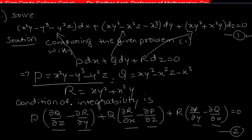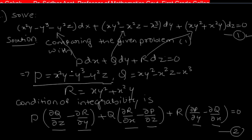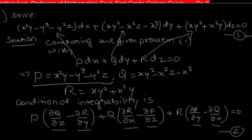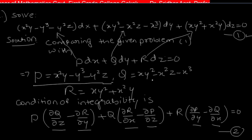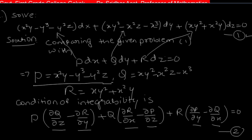Differentiating P with respect to y: all terms contain y, so ∂P/∂y = x² - 3y² - 2yz. Then differentiating Q with respect to x: all terms contain x, giving ∂Q/∂x = y² - 2xz - 3x².